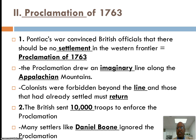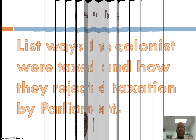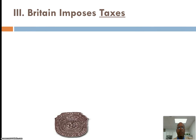Daniel Boone is one person who actually pushed beyond and fought back against the proclamation line instituted by the British. So let's look at ways the colonists were taxed and how they rejected taxation from Parliament.